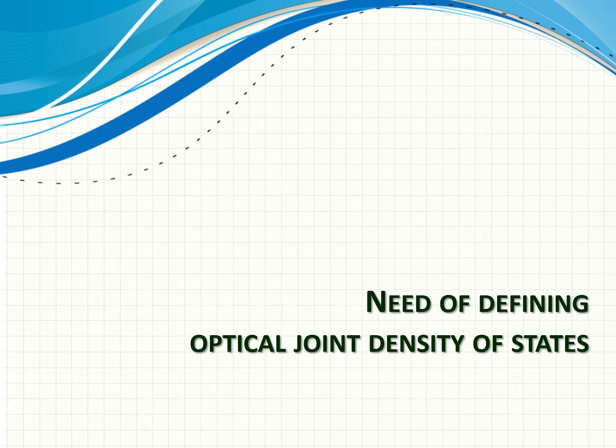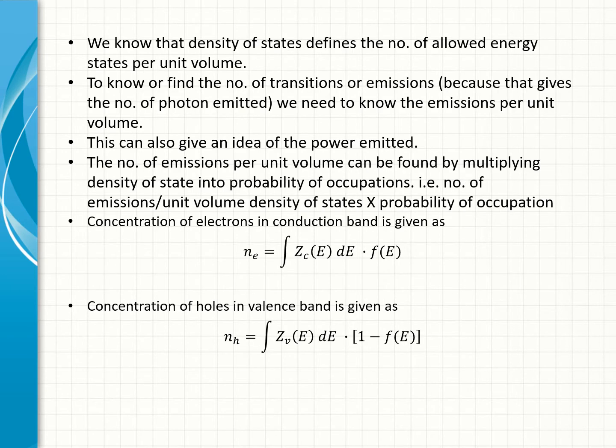Need of defining optical joint density of states. We know that density of states defines the number of allowed energy states per unit volume. To know or find the number of transitions or emissions, because that gives the number of photon emitted, we need to know the emissions per unit volume. This can also give an idea of the power emitted.